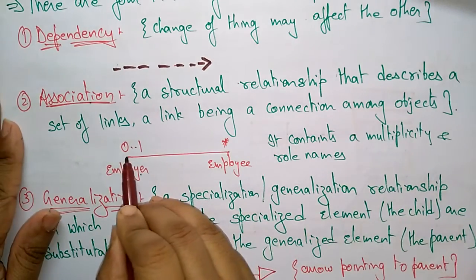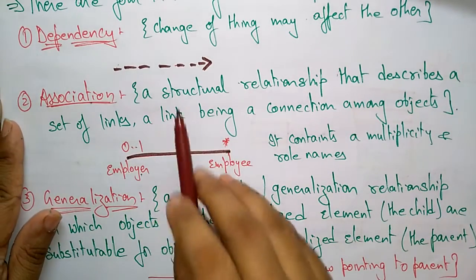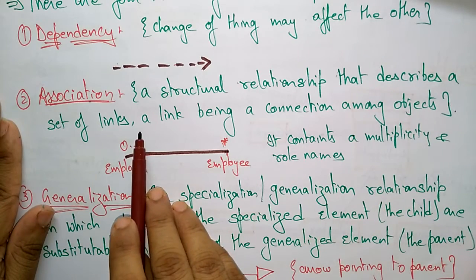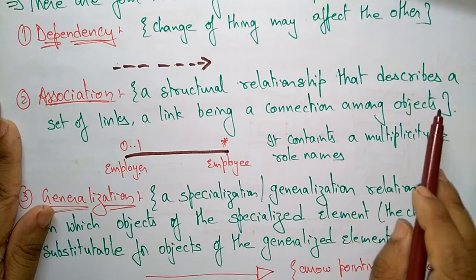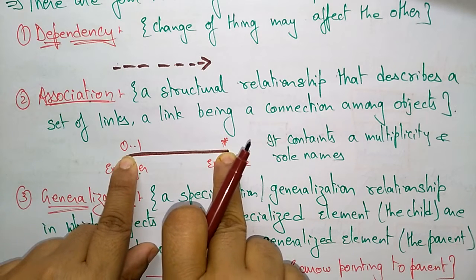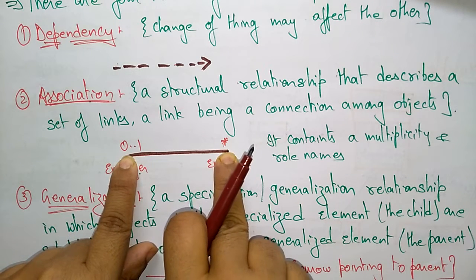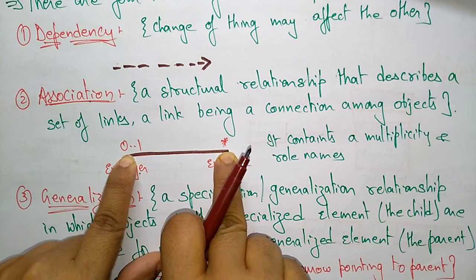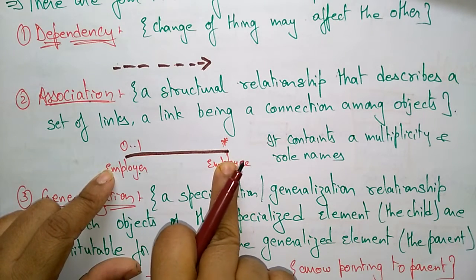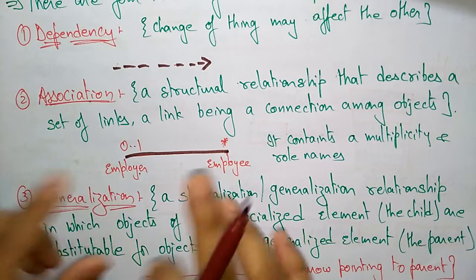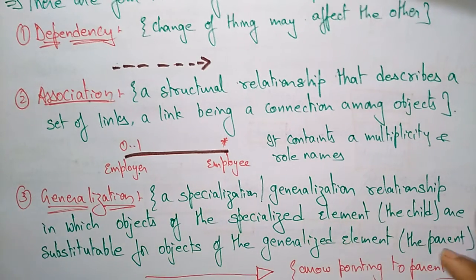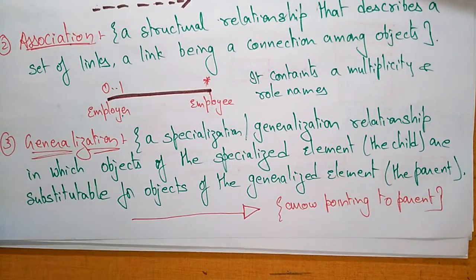Association is indicated by a solid line. It represents a structural relationship that describes a set of links, a link being a connection among objects. It contains multiplicities and names — for example, zero or one employer and many employees. This is an association between objects, showing only the structural relationship.